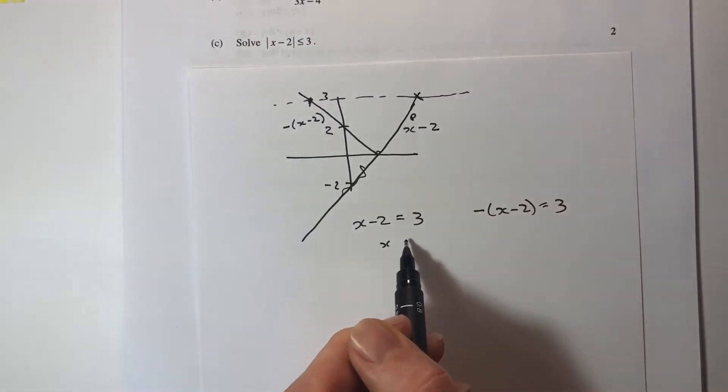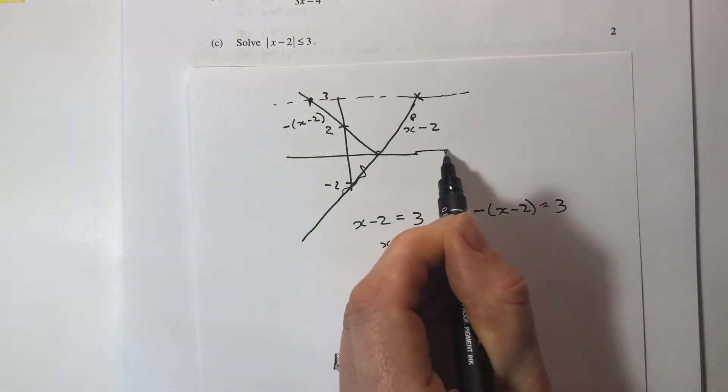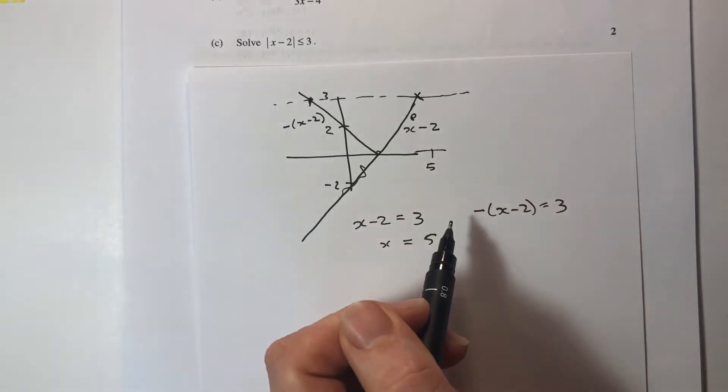Now adding 2 to both sides of this, x would be 5. And 5 actually seems like a reasonable answer to that.